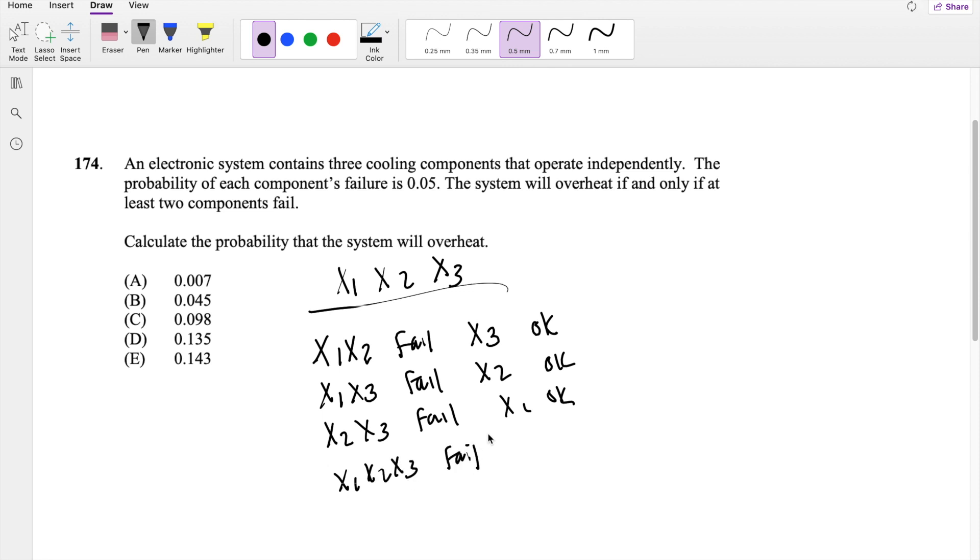So what's the probability? Well, x1 and x2 failing, that's 0.05 times 0.05, right? Because they're independent, we can just multiply together. x3 is okay, so that's 0.95. And it's going to be the same for the other two combinations.